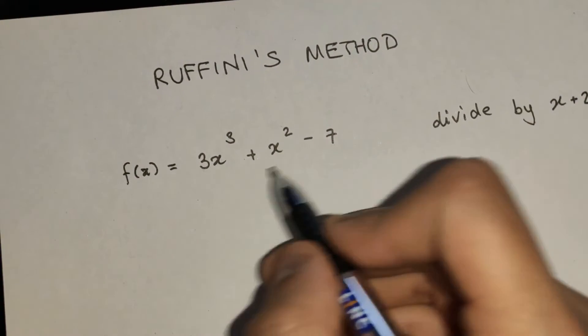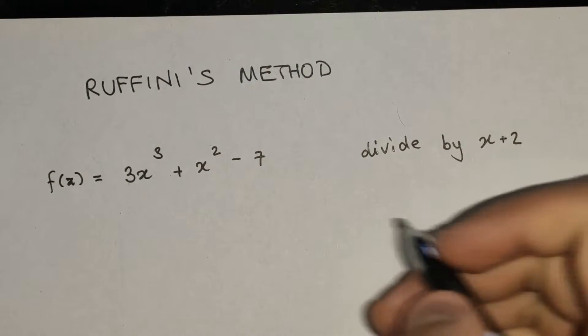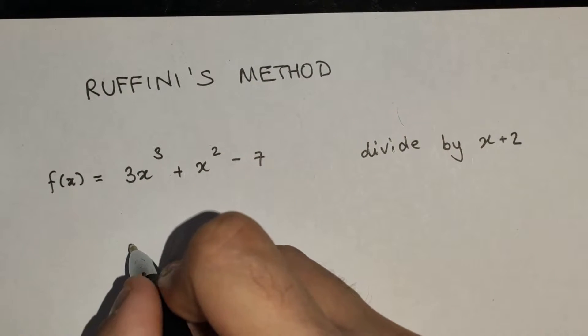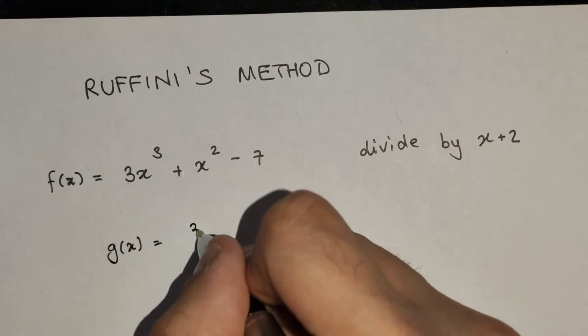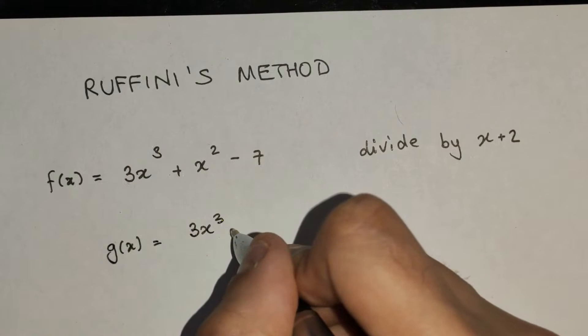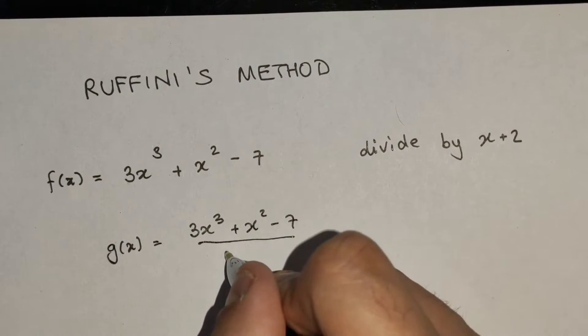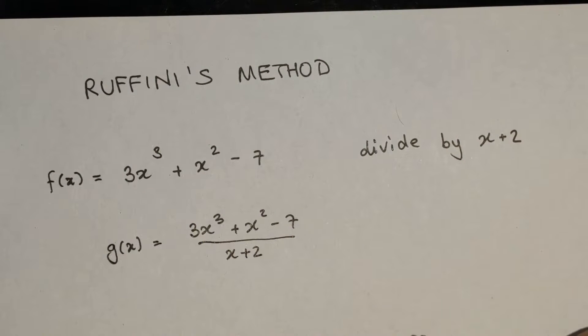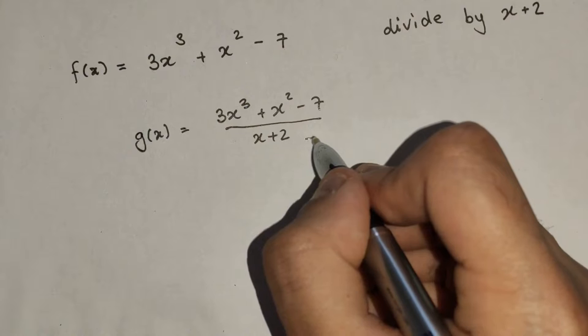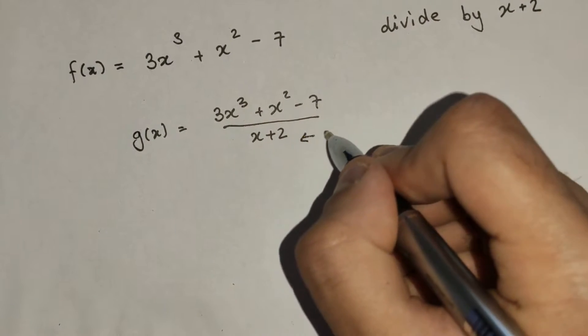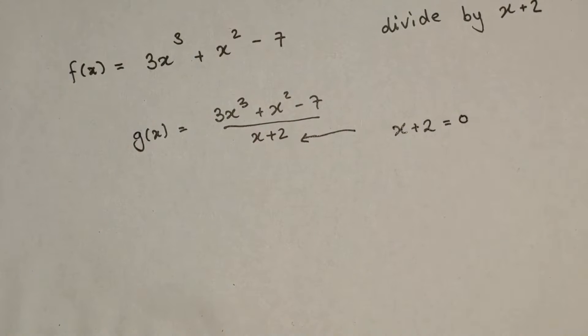So the method used to do this: you are given a function and you are told to divide by a certain function. So this is the same as writing a new function, g of x is therefore equal to 3x cubed plus x squared minus 7 divided by x plus 2. Now, the way we do this is we look at the denominator and we say, okay, the denominator is 0.